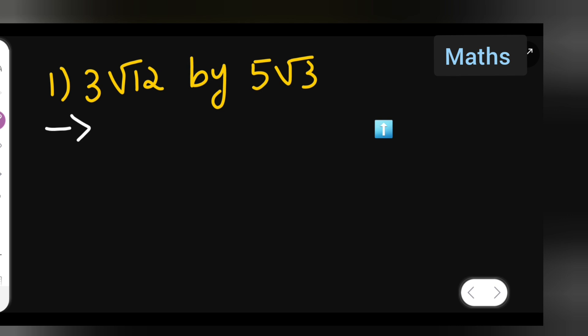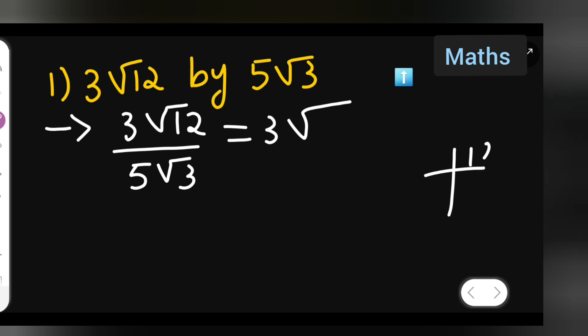So first you will write down that 3√12 upon 5√3. Now, split this. 3√12 will be splitting up into 2 types. 1 will be here, 12 is there.